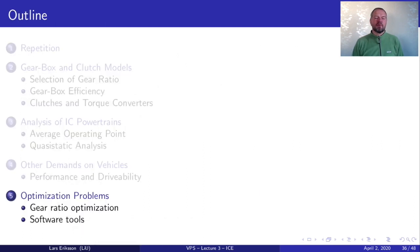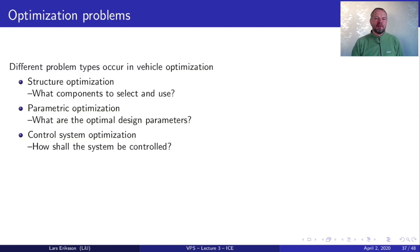Now I come to the final item for this lecture which will be on optimization problems and on software tools. We have different types of optimization problems that occur in the vehicle optimization and vehicle design. We have structure optimization where we are selecting for example what type of hybrid should we use. Should it be a series hybrid, should it be parallel hybrid or a regular vehicle.